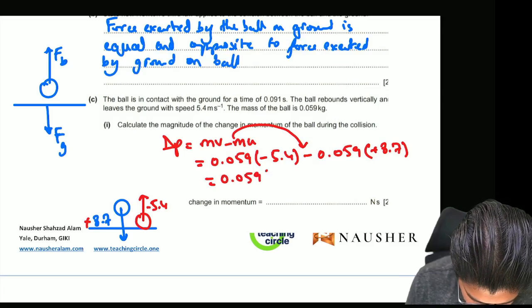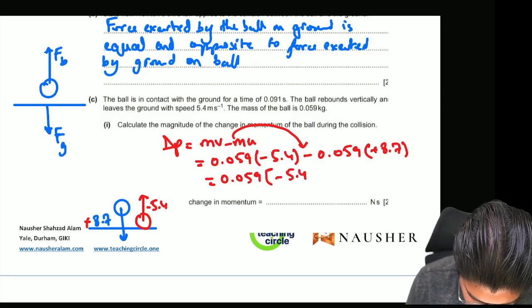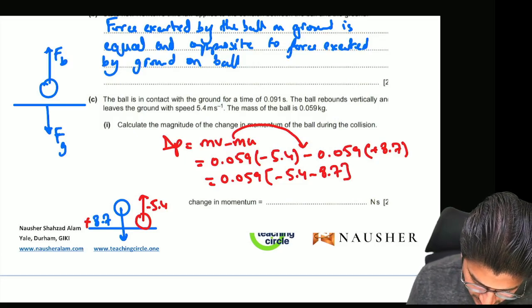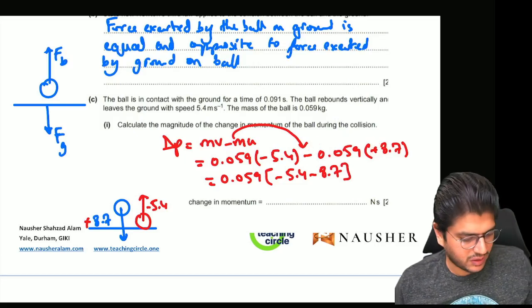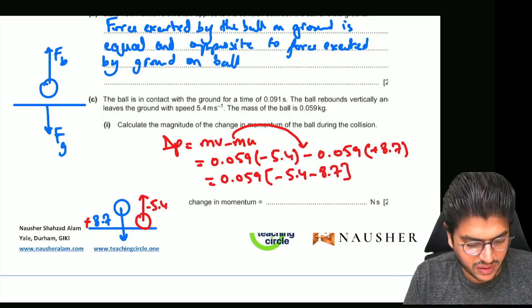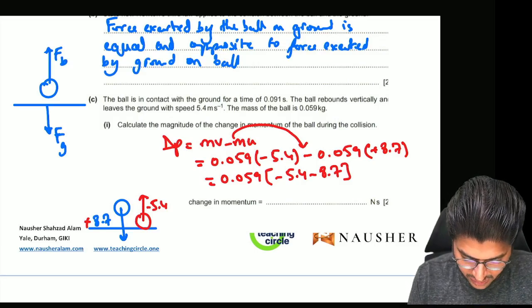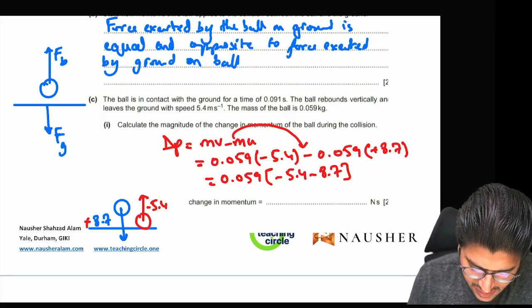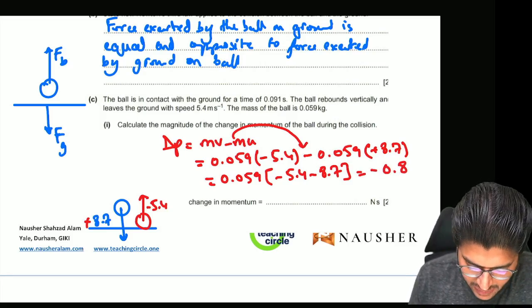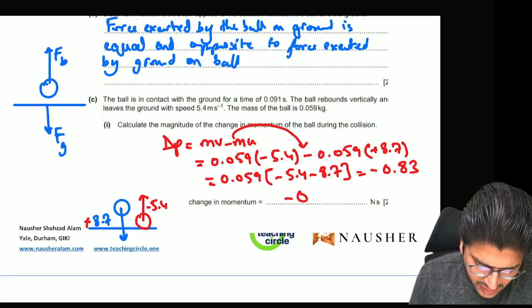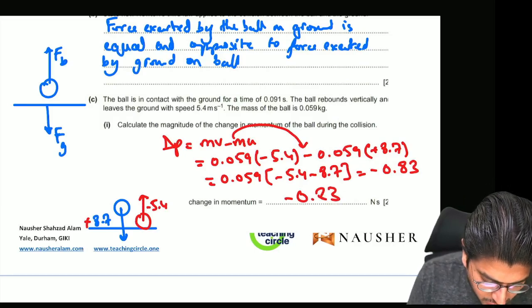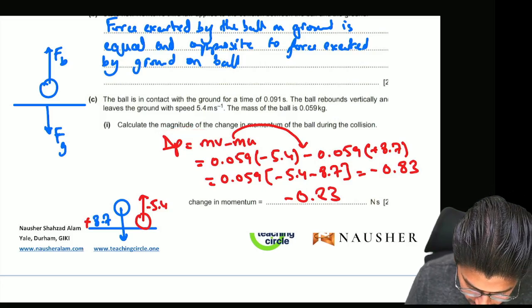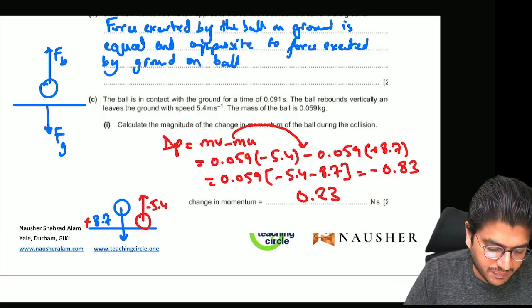You solve this and you can actually take 0.059 common, and you will get minus 5.4 minus 8.7, because this plus and this minus will multiply to give you minus. Let's do it in the calculator: 8.7 and 5.4 times 0.059. The answer I'm getting is minus 0.83 kg·m/s.